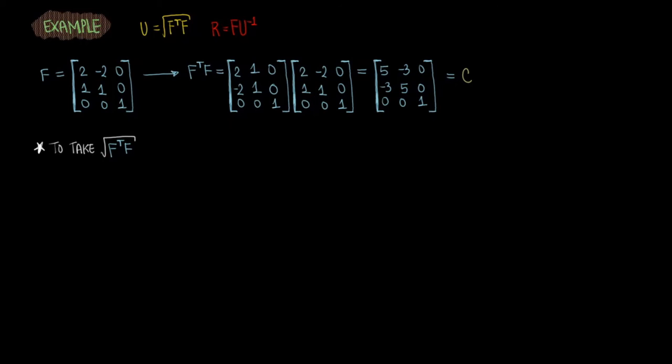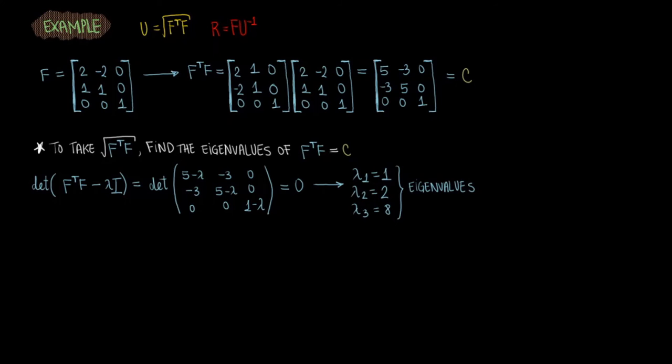This trip starts by finding the eigenvalues of C. You can go about finding the eigenvalues of C the usual way, by solving the characteristic equation. So you take the determinant of C minus lambda times I and set that equal to zero. We learned that the eigenvalues of C are 1, 2, and 8.